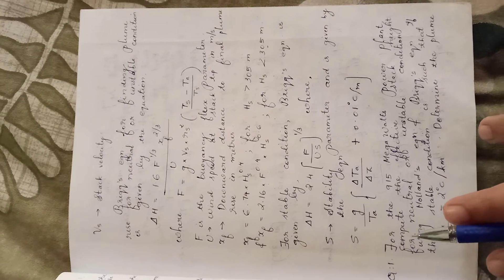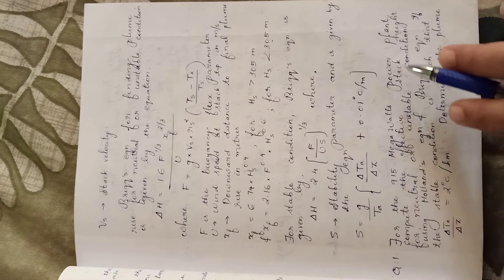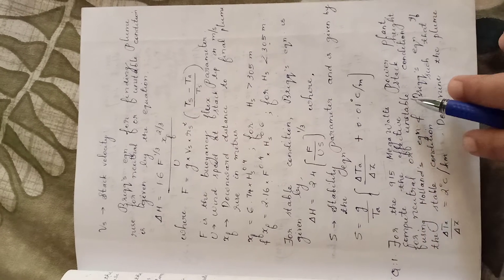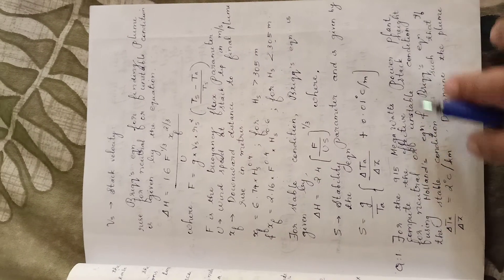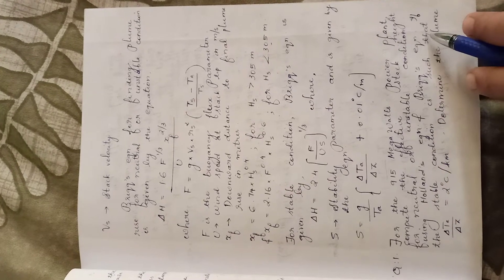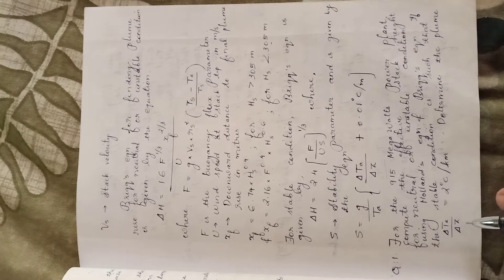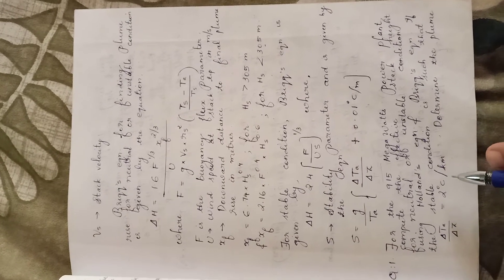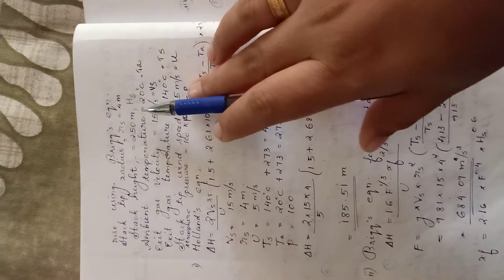Plume rise problem. For a 915 megawatt power plant, compute the effective stack height for neutral or unstable conditions using Holland's equation and Briggs' equation. For stable conditions where delta TA by delta Z equals 2 degrees Celsius per kilometer, determine the plume rise using Briggs' equation.